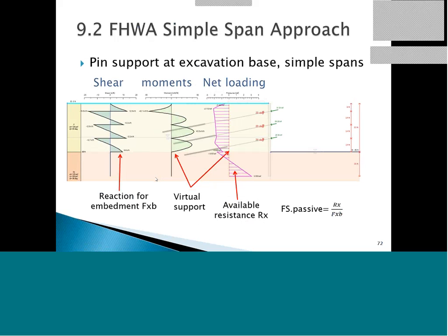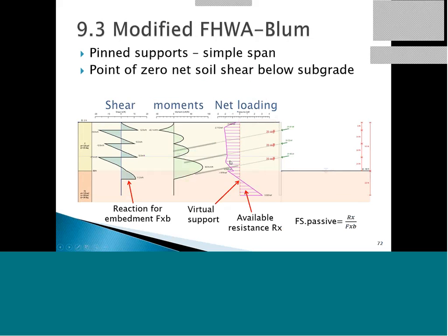With the FHWA simple span approach, looking at the same 50-foot (almost 18-meter) excavation example: the manual recommends fixing our subgrade reaction right at the excavation level, then doing simple spans, with a continuous beam from the top of the wall. By modifying FHWA with BLAMS, we have a continuous beam from the top to the second support, then simple spans, with a simple span moment fixed at the virtual point where our net loading goes to zero.